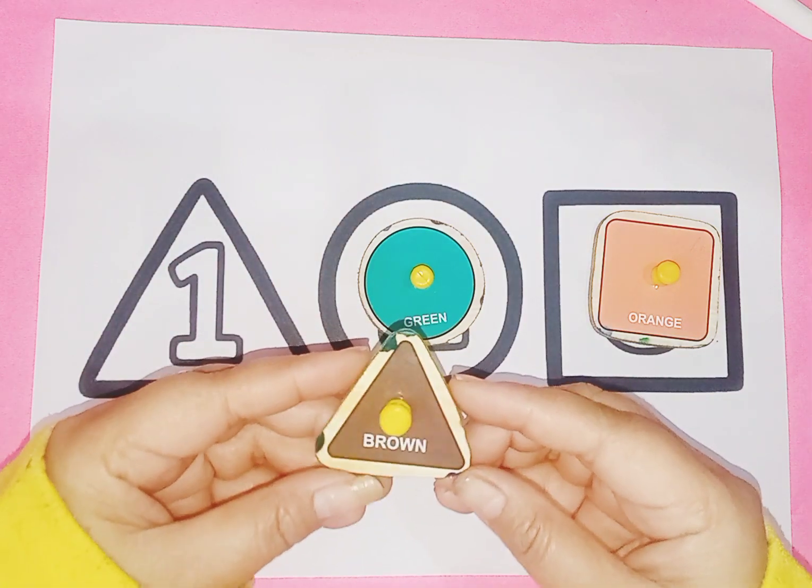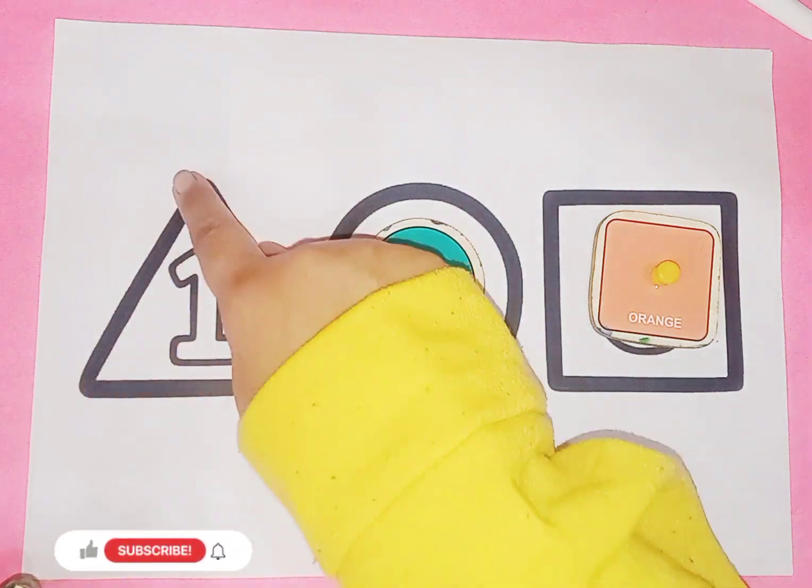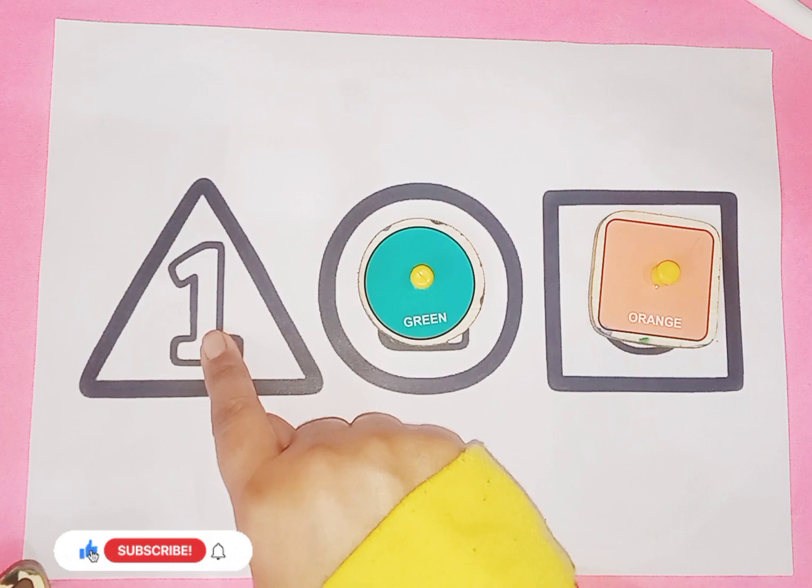This is triangle. Triangle is like this, and number is 1.